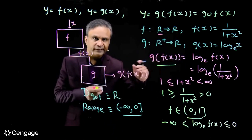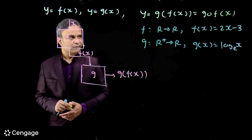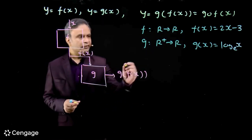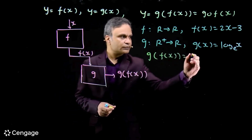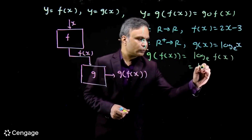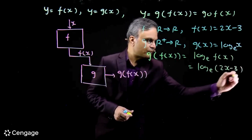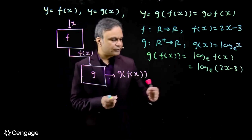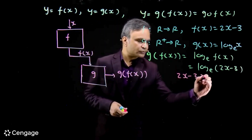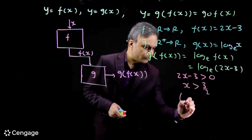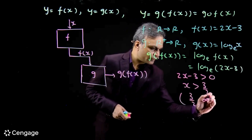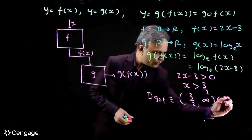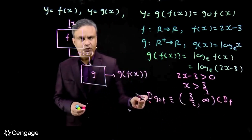Let us take one more example. Consider function f from R to R where f(x) = 2x − 3, and function g from R⁺ to R where g(x) = log x. We define the composite function g(f(x)) = log(f(x)) = log(2x − 3). For this function, 2x − 3 must be greater than 0, giving x > 3/2. So the domain of goff is the open interval (3/2, ∞), which is a subset of the domain of f, which is R.